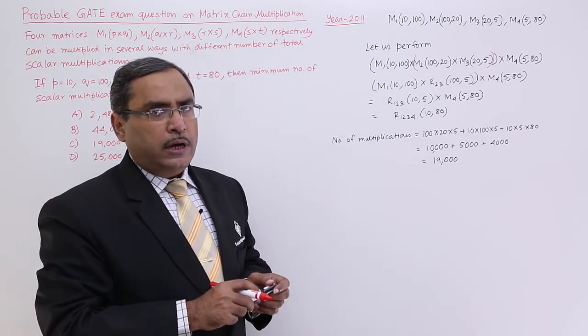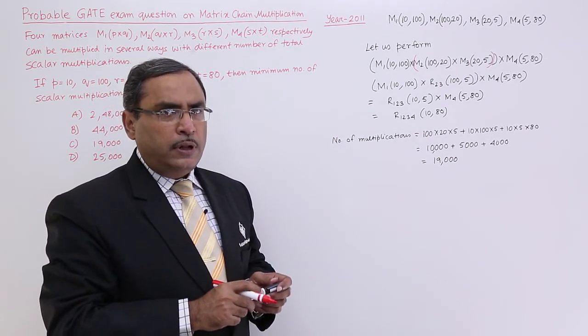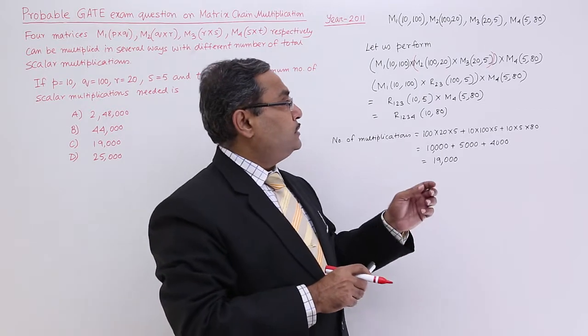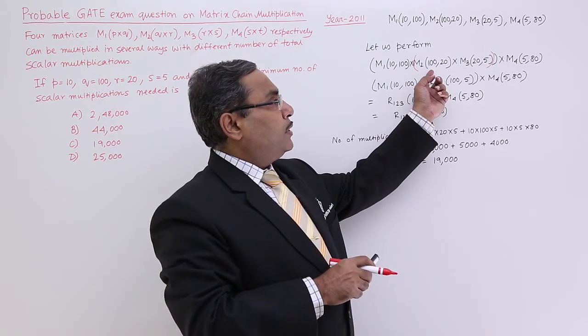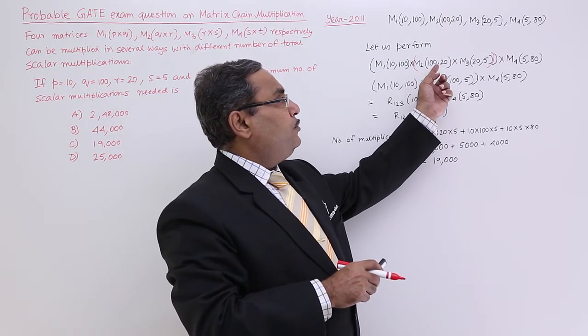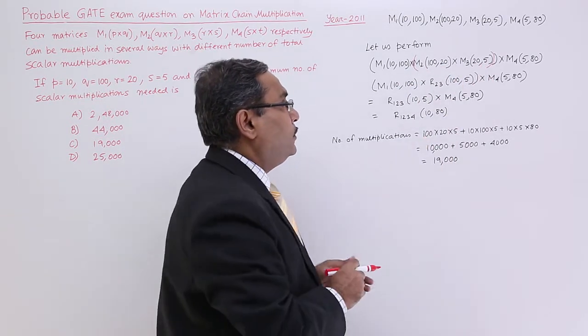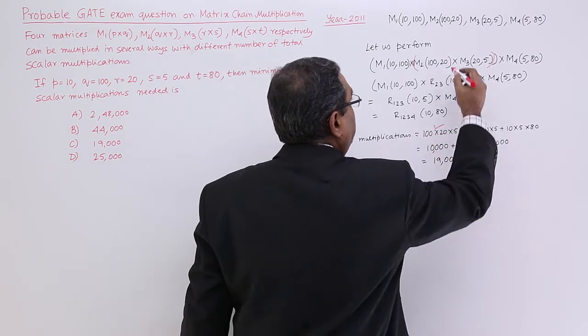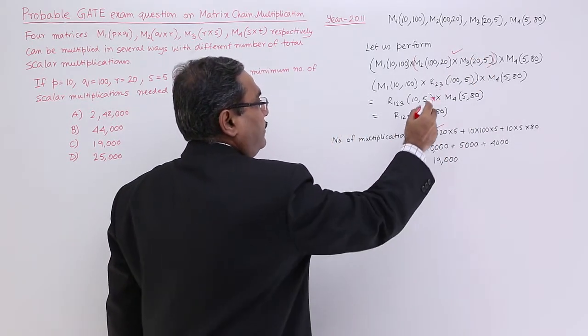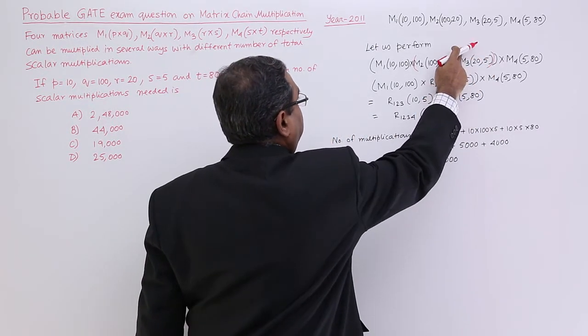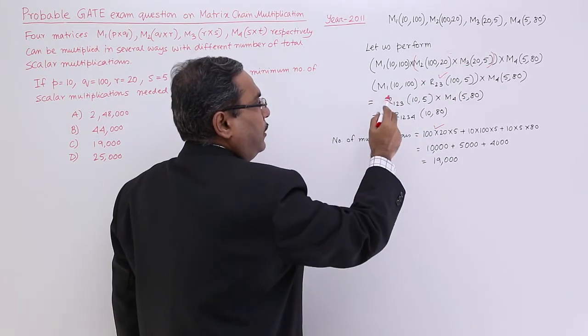The multiplication can be done. Let me calculate the number of productions required, scalar productions required. Here, the number of scalar productions will be 100 into 20 into 5. So, 100 into 20 into 5 for this one. For this one, I am writing this. So, have this one R2,3.